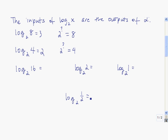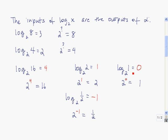Let me give you a couple to work on — press pause while you work on these four. For the first one you should have gotten 4, since 2 raised to the 4th power is 16. Here, 2 raised to the 1st power is 2, and 2 raised to the 0 power is 1. So to evaluate logarithms, you need to be thinking backwards — it's the exponent to which the base needs to be raised to get the given answer.